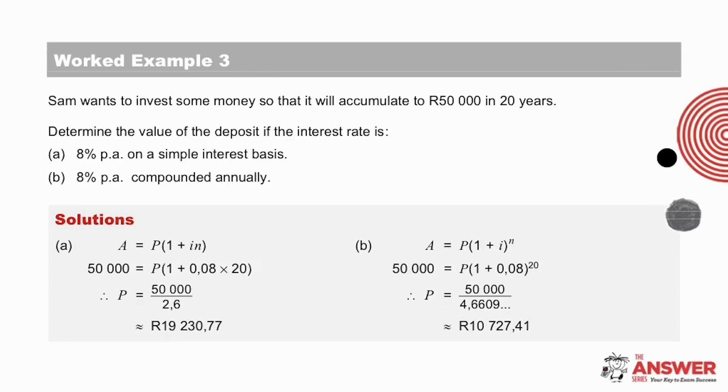Let's have a look at the answer for A. Remember what we needed to find was P. And that A was our 50,000 rand, the amount in the future. Our N was 20 years. And I in both cases is 8%. Substitute in all the information given and solve for P by dividing 50,000 by the value from the bracket, which is 2.6. Then rounding off, the final answer is approximately 19,230 rand and 77 cents.